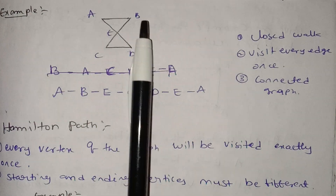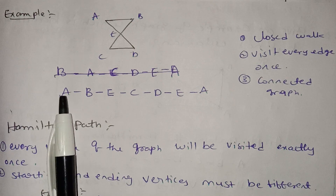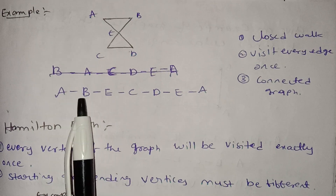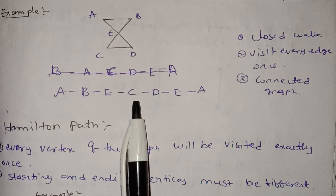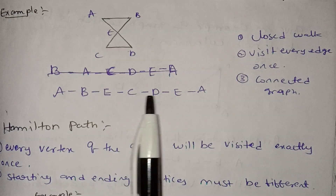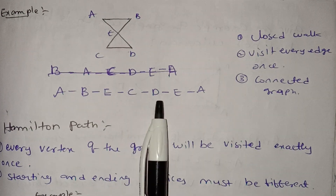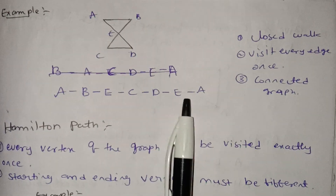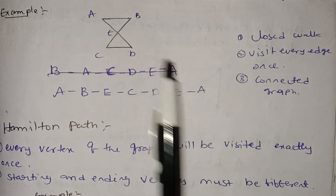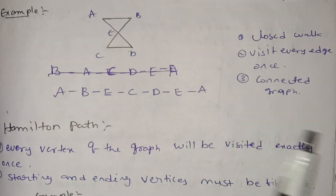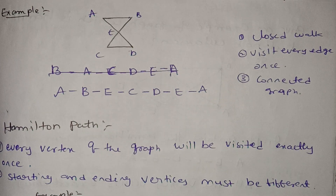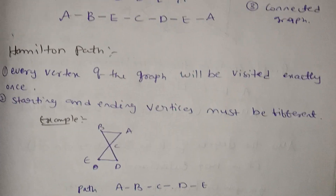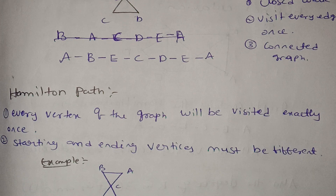Another Euler's circuit example: A→B, B→E, E→C, C→D, D→E. This is the starting and ending vertex demonstration of an Euler's graph.